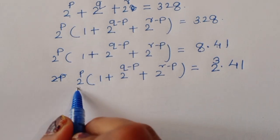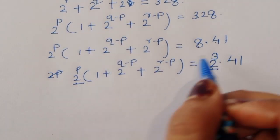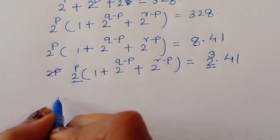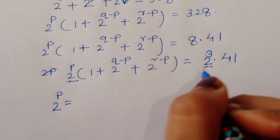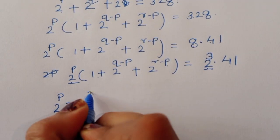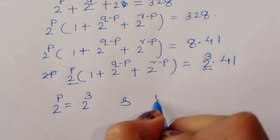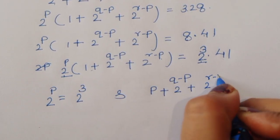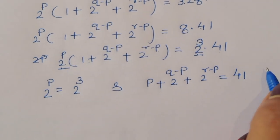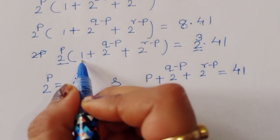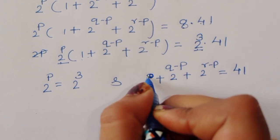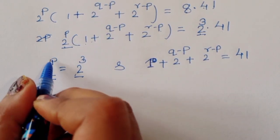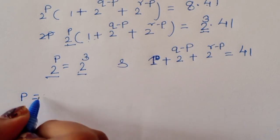Comparing both sides: 2 power P equals 2 power 3, and (1 plus 2 power Q minus P plus 2 power R minus P) equals 41. Comparing base and power, we get P is equal to 3.